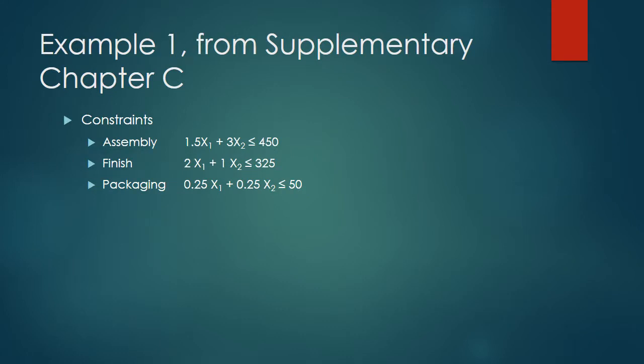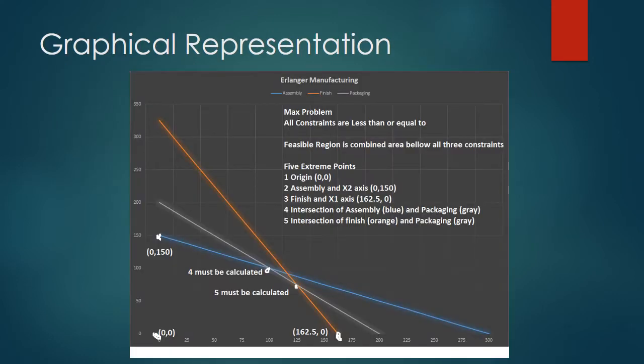Here are three constraints from Supplemental Chapter C, Problem 1. These three lines intersect. I'll show you how to work out the coordinates. Here's a visual representation of the three lines.